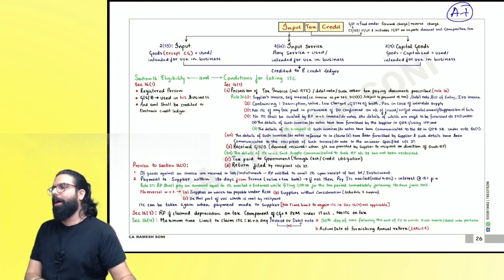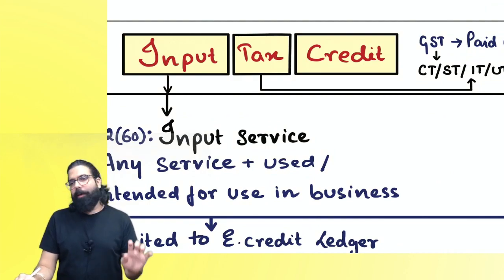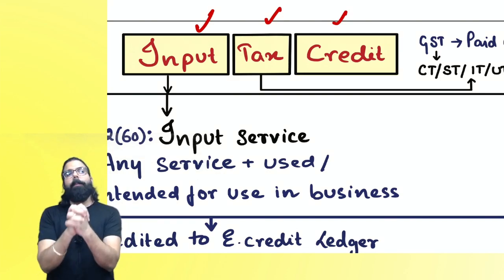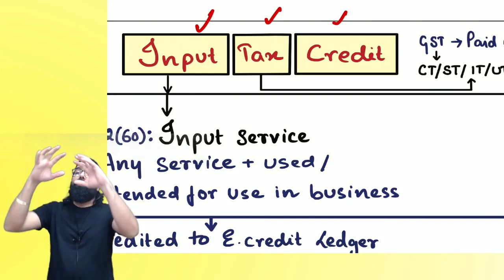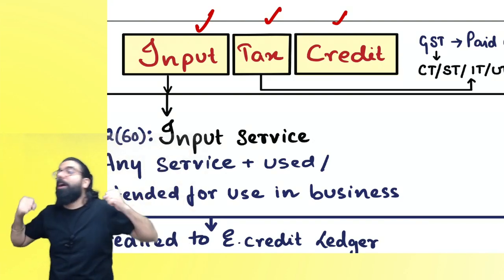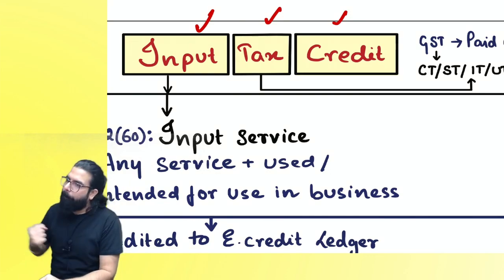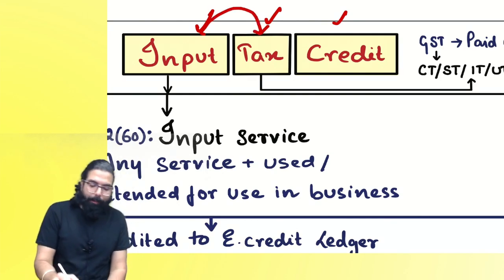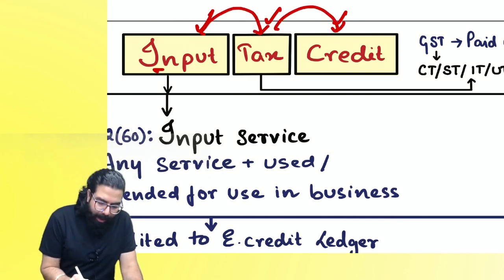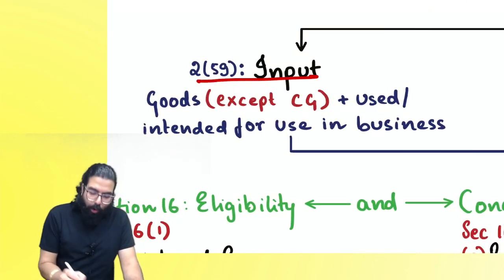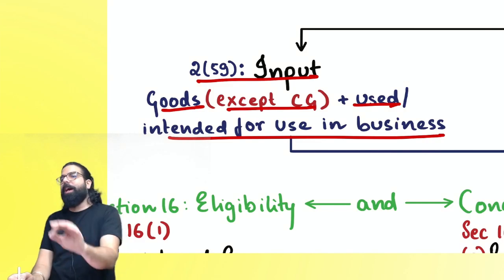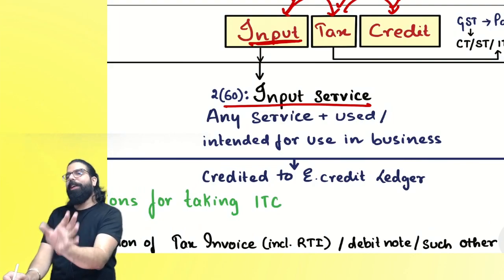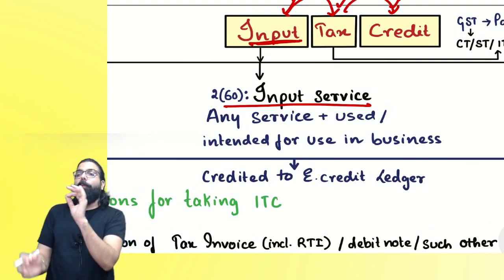Input tax credit: generally, 'input' means only goods. But on a broader term, inputs include goods, input services, and capital goods. Whatever GST you pay on those, you will be able to take the credit. Inputs specifically means only goods other than capital goods used or intended to be used in the business. You will also get credit of input services used or intended to be used in the business.